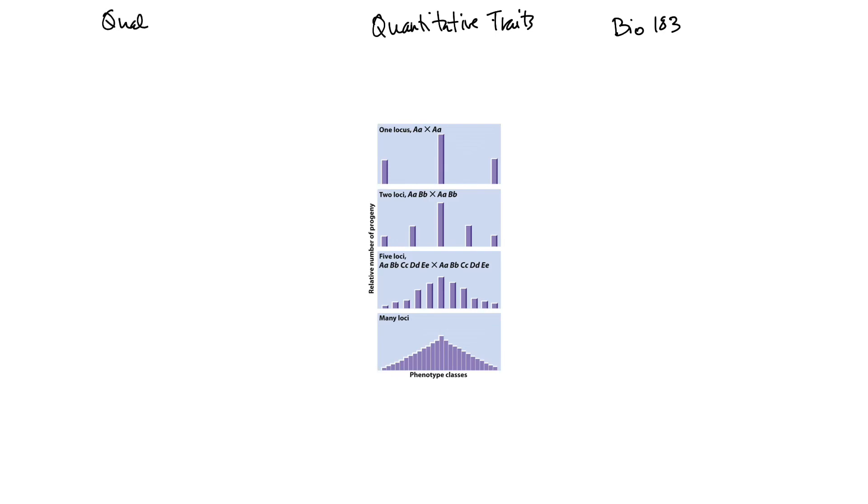So an example of a qualitative trait would be like red or white, something that would be like spotted or solid. These are, you can put the individual into one category or the other, but with a quantitative trait, you're going to have more of a spread of phenotypes. And typically this is underlain by multiple genes.